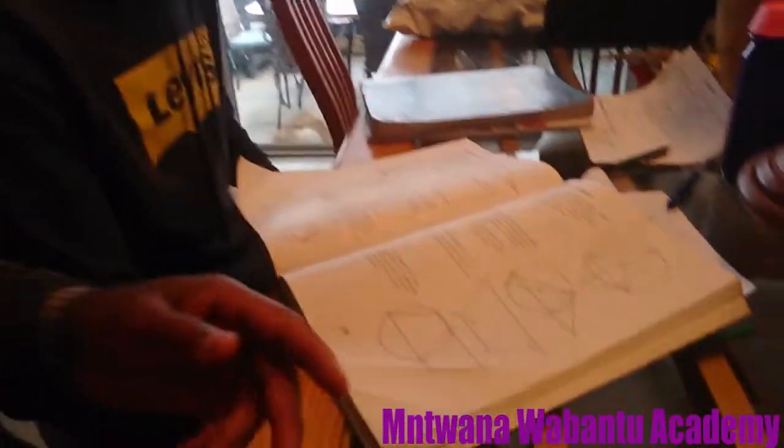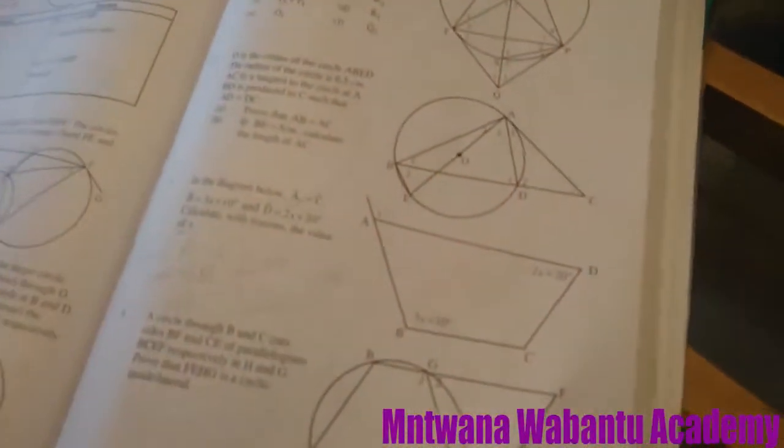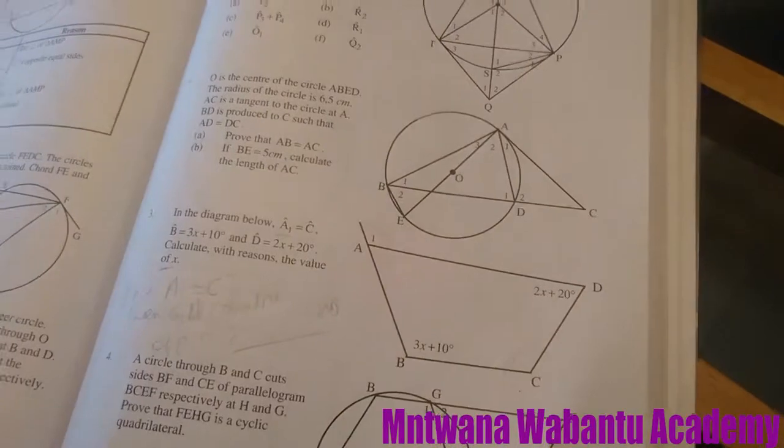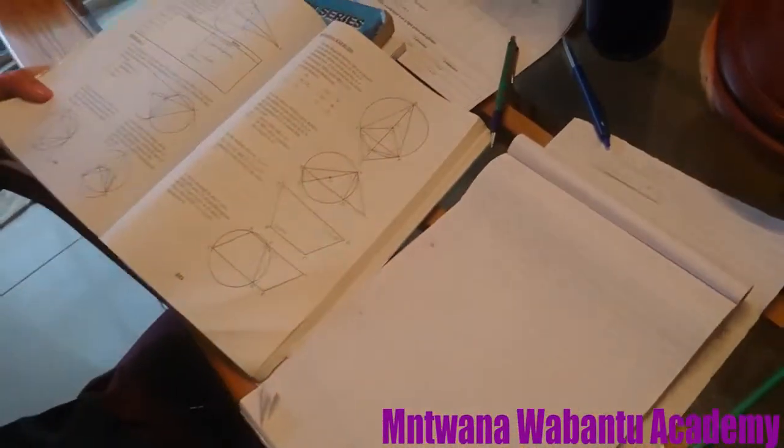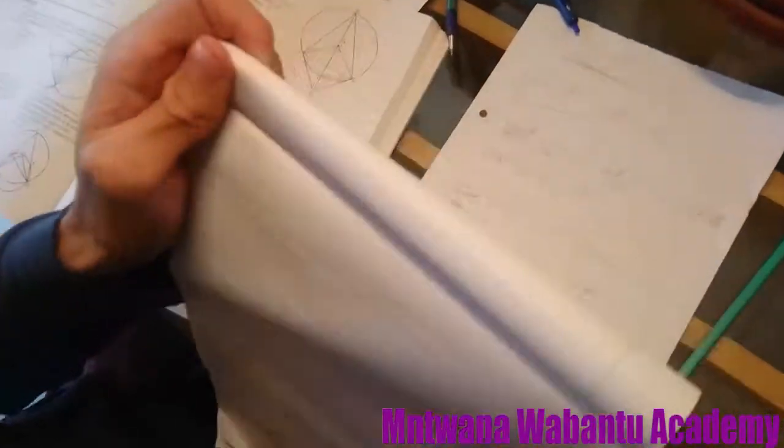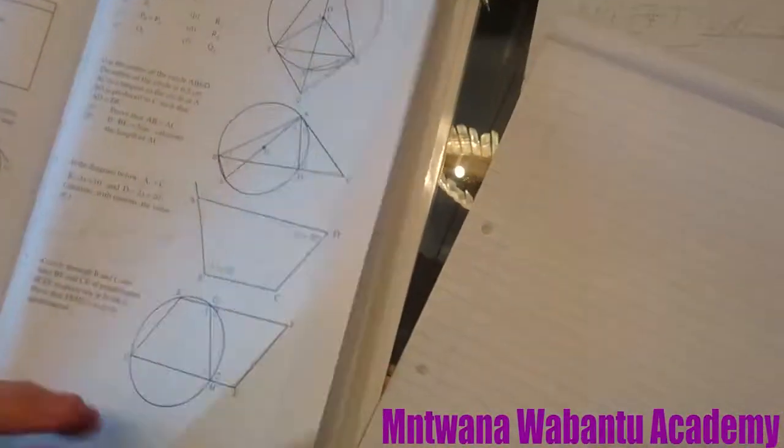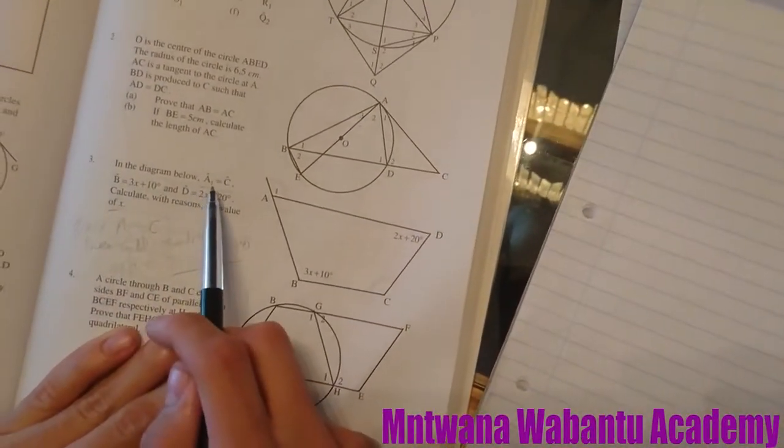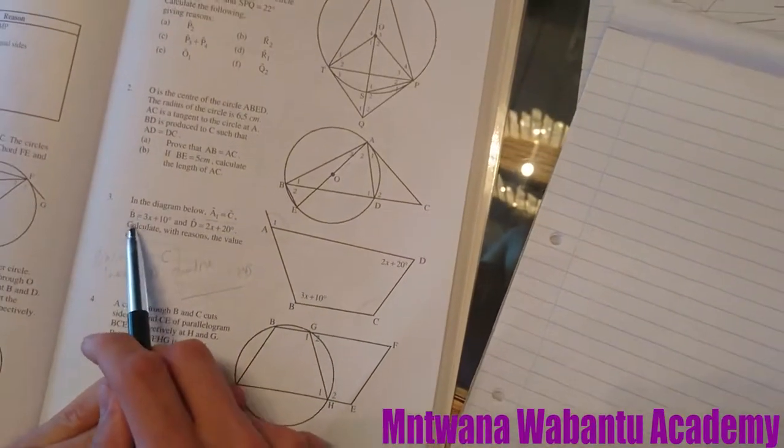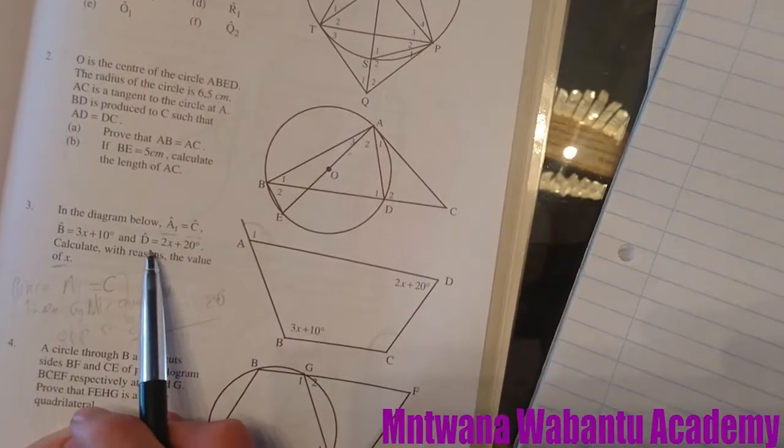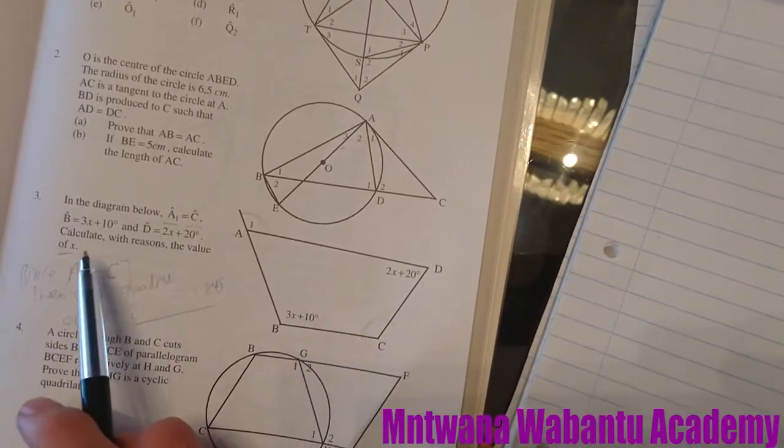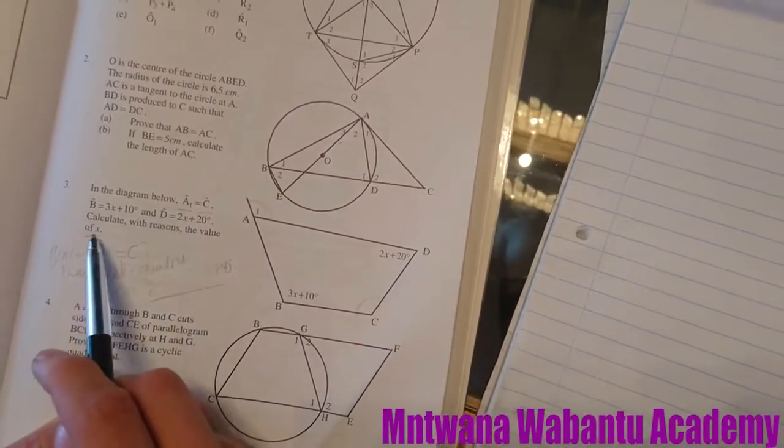So Josh, what do you say you want to do today? I'm gonna be solving question number three. In the diagram below, angle A1 is equal to C1, and angle B is equal to 3x plus 10 and angle D is equal to 2x plus 20. Calculate with reasons the value of x.